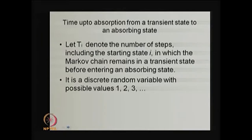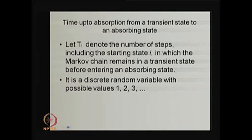The next result of interest in a reducible Markov chain with one or more absorbing states is the mean time to absorption — basically the mean time to absorption starting from a transient state to an absorbing state. That means how much time on average the system spends in the transient states before absorption. For that I am going to define the random variable T_i.